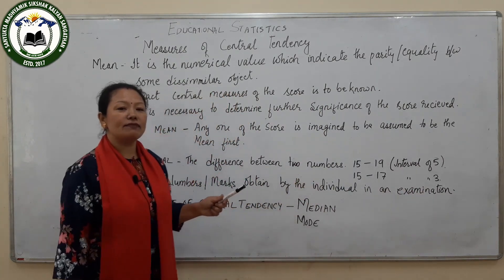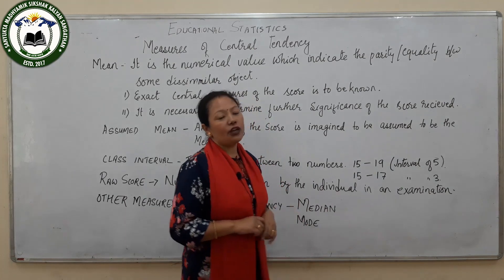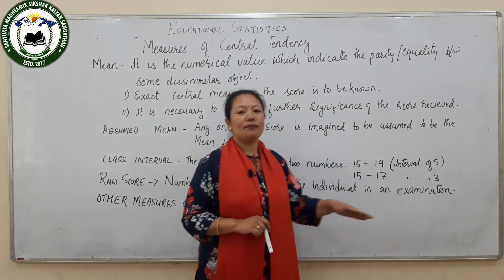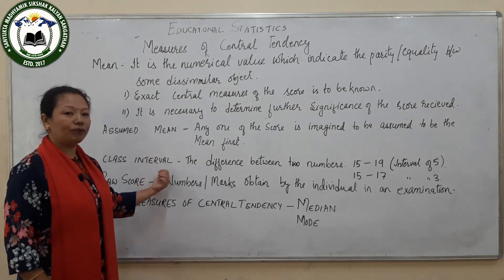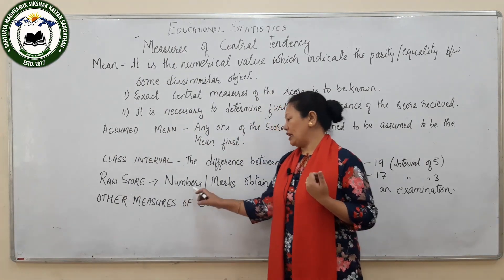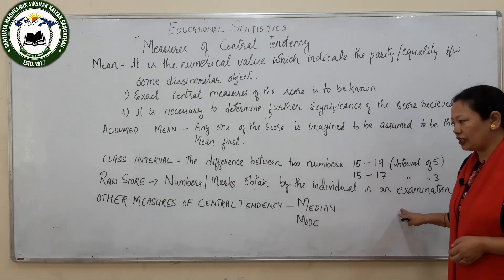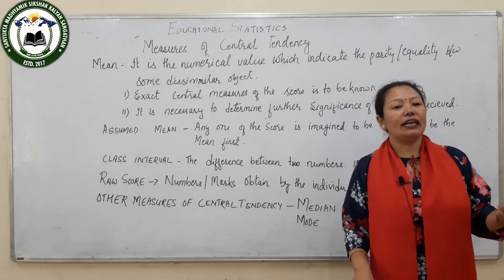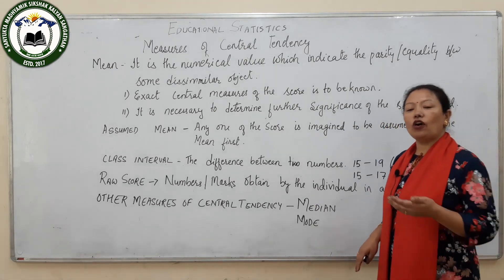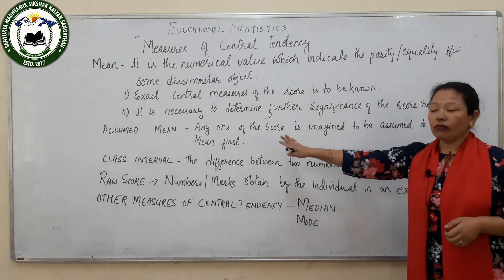This is very important because in examinations you will be given numbers to arrange, either in an interval of 5 or in an interval of 3, so you must have knowledge of class interval. The next concept is the raw score. Raw scores are the marks which you obtain in your examination — these are the marks or the performance of an individual during any examination. If you appear for any competitive examination, the examiner will evaluate you through certain questions and will decide your achievement based on your performance.